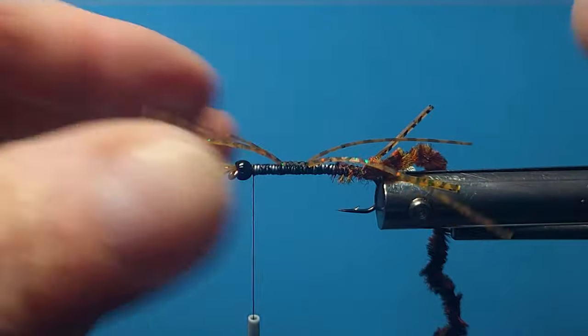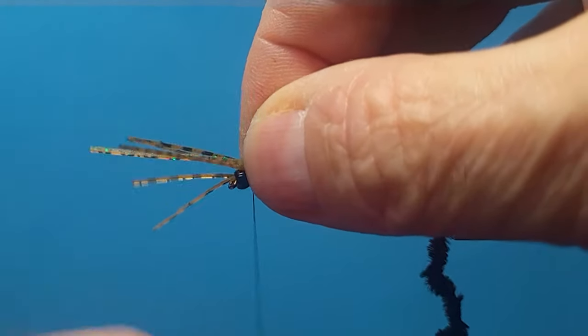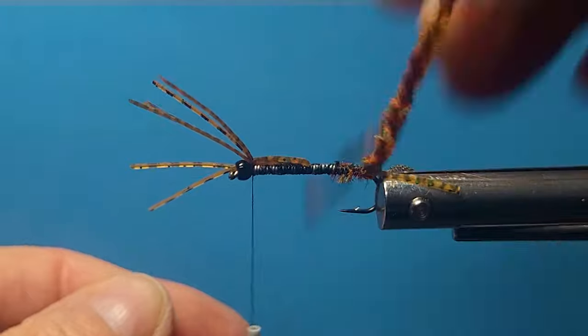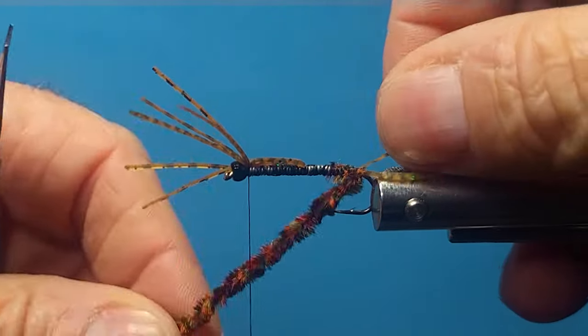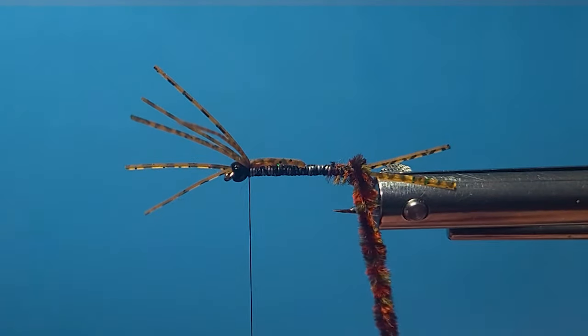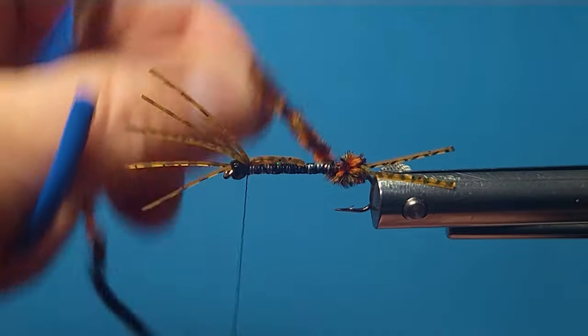Take my thread forward. Now I'll just take these back legs, they kind of get in the way, so I just fold them forward, just lay the thread over, just keeps them out of the way, handy way of doing that. And then we'll wind our chenille forward.